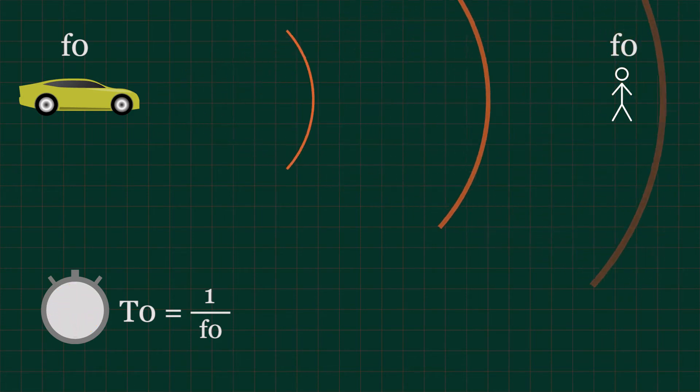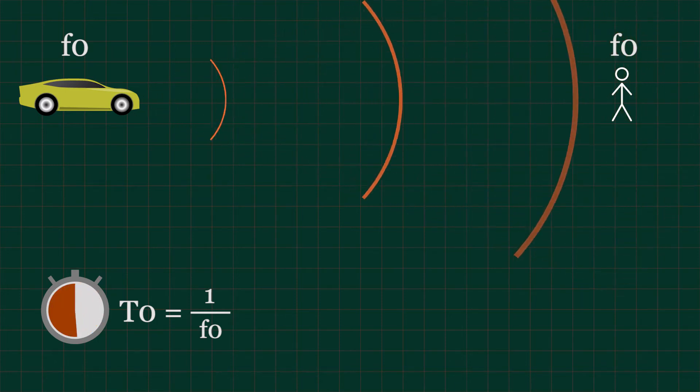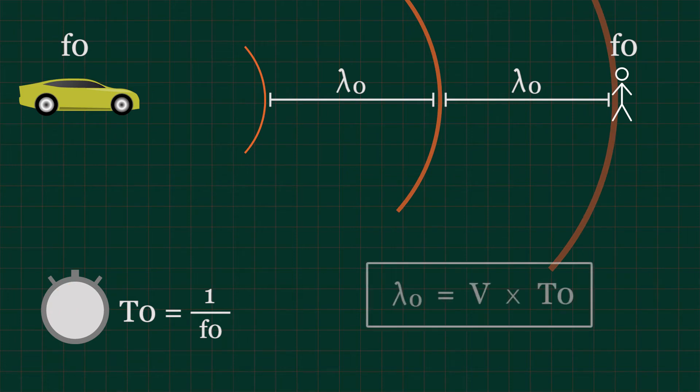As 1 over frequency is equal to period of oscillation, we can write 1 over f0 is equal to t0. t0 means period of oscillation in this condition. It must also be understood that the wavelength lambda is equal to the wave speed v times oscillation period t.